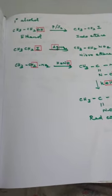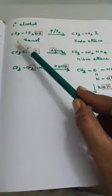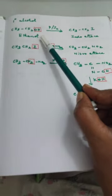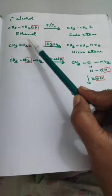Now let us see the chemical equations. For primary alcohol, let us take ethanol: CH3CH2OH. When treated with P and I2, the OH group is replaced by iodine. The product formed is iodoethane. This is the first step of the process.